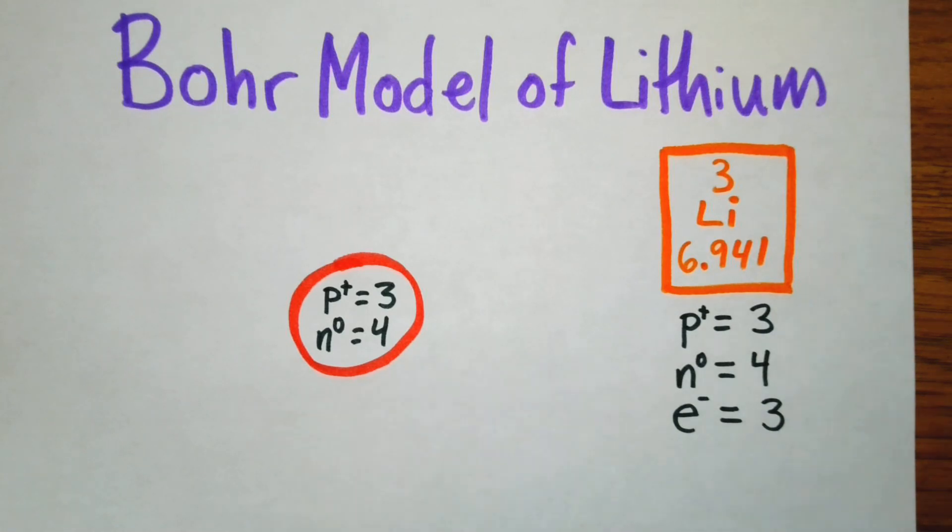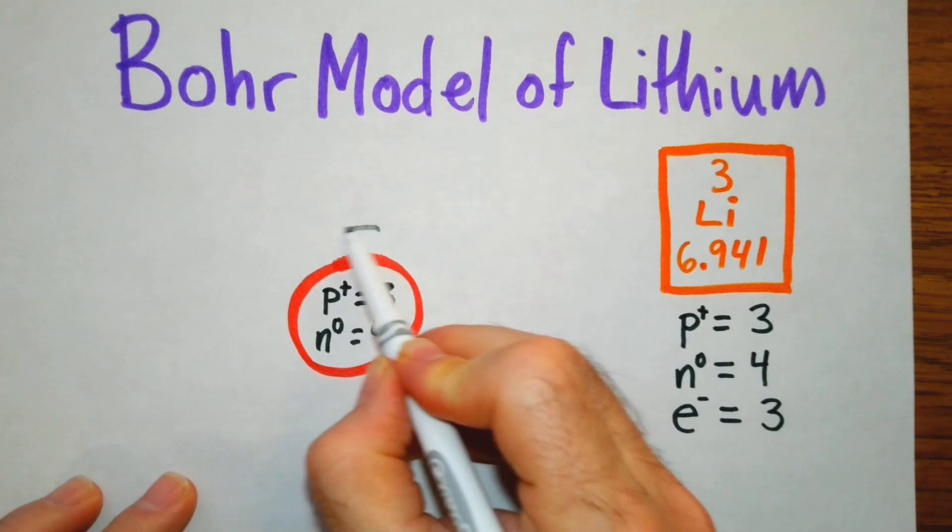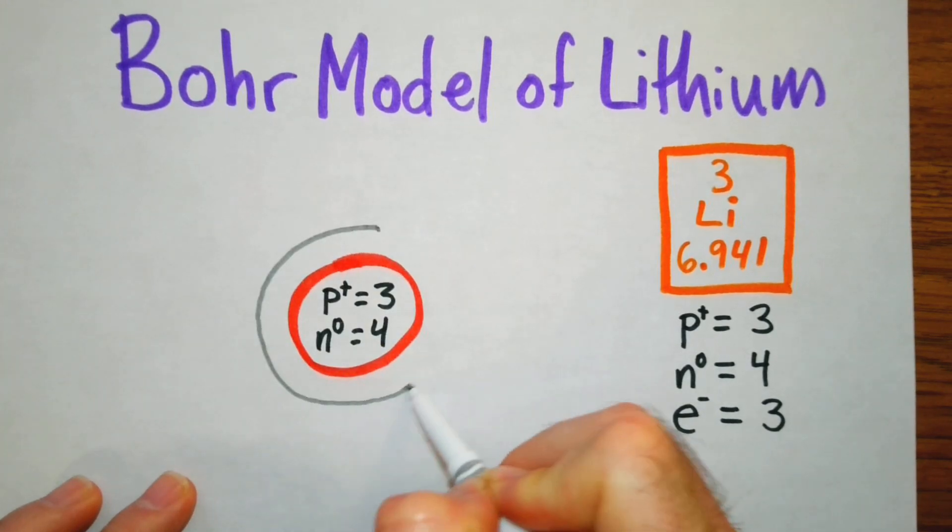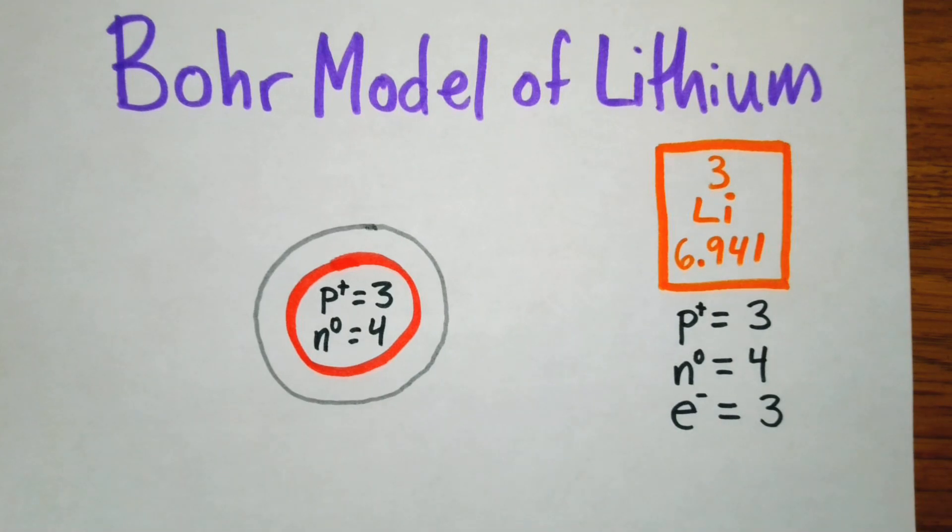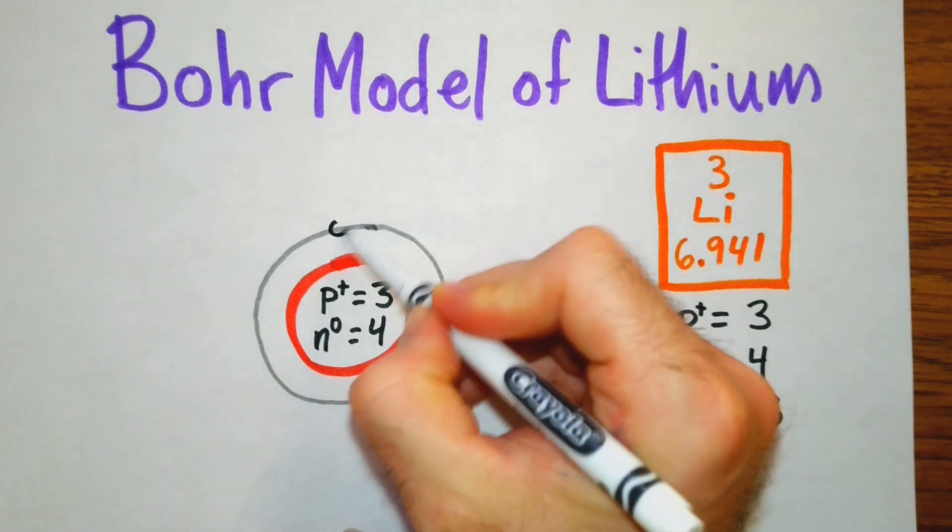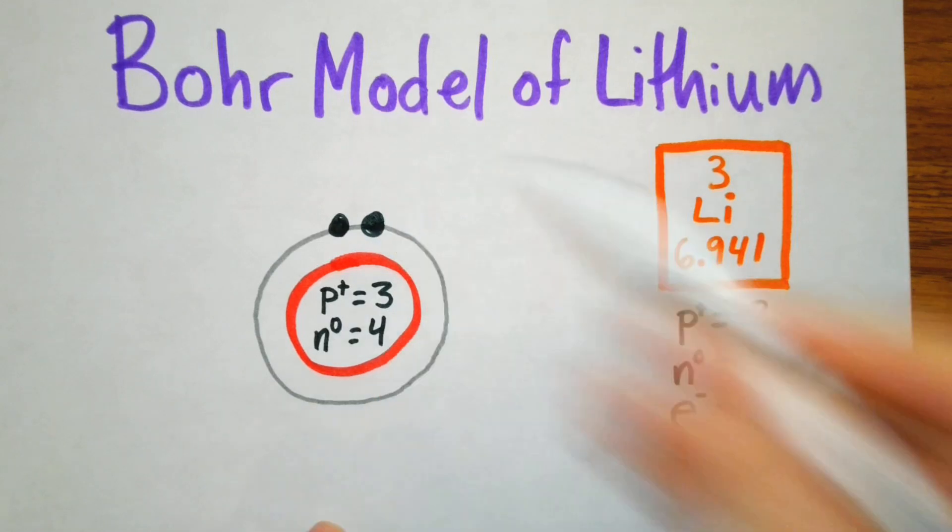We're starting with our lowest orbital, and that first orbital right there can hold up to two. So we have one electron, two electrons.